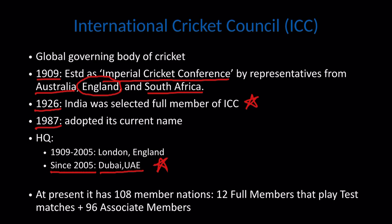At present, the ICC has 108 member nations — 12 full members that play Test matches and 96 associate members. This is important because we don't see many teams playing in international cricket. If you were ever asked in an exam whether ICC has 108 member nations, you might think it's false, but it is actually true and quite surprising, so keep this in mind.